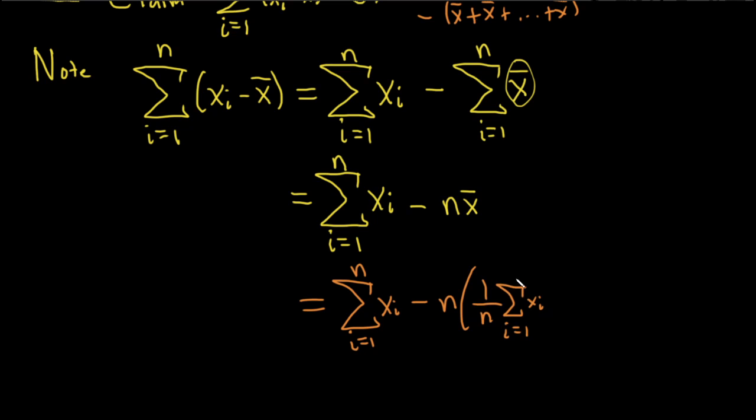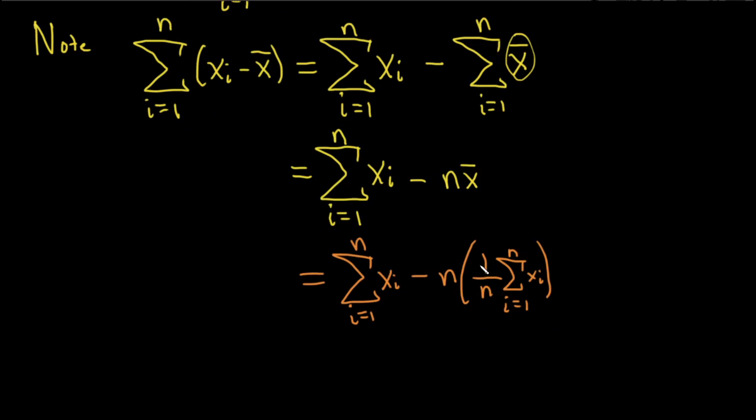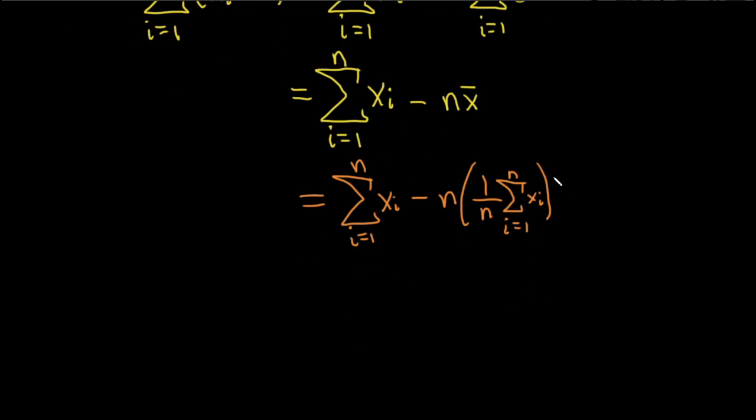I'm going from i equals 1 to n. That's the definition of x bar, it's the actual sample mean. So you add up all the x's and divide by the total number. And look at this, these cancel, and so we end up with the sum.